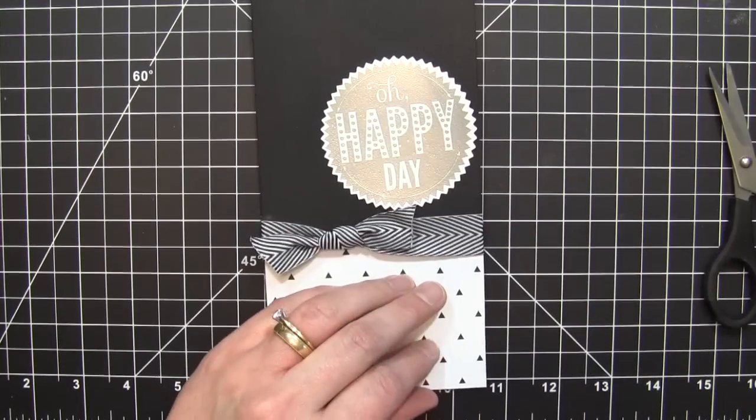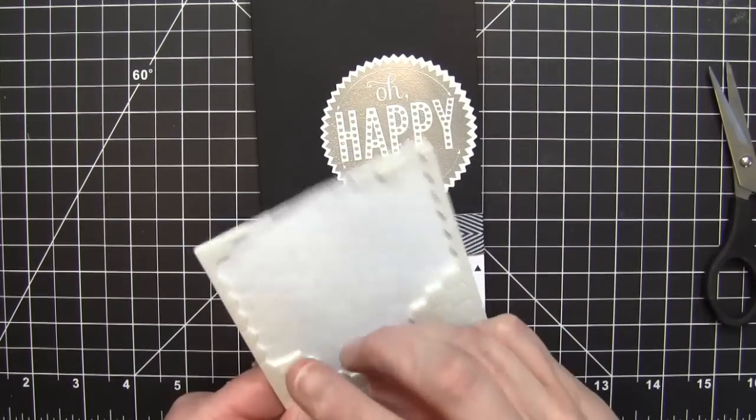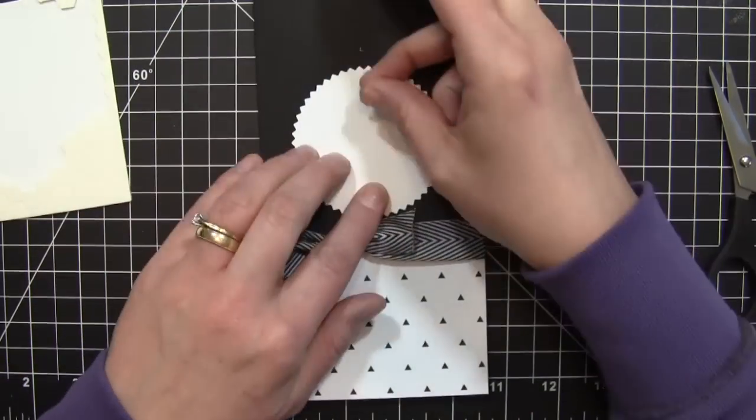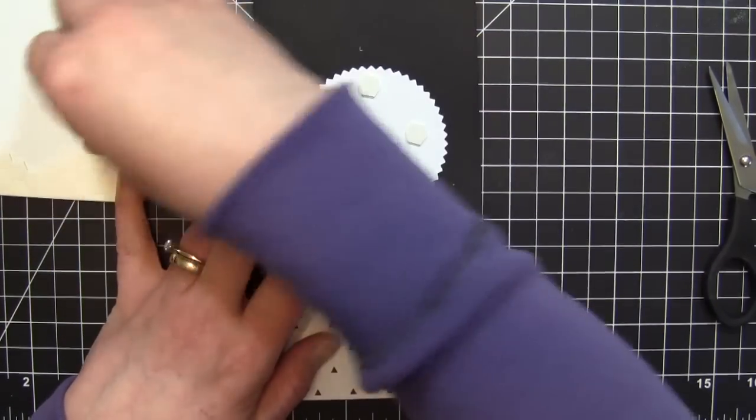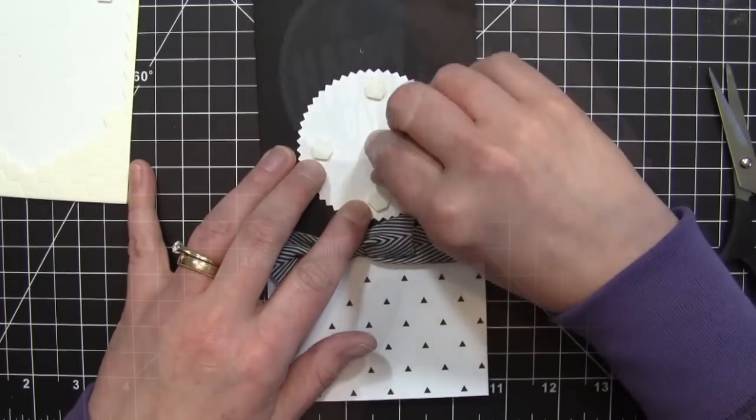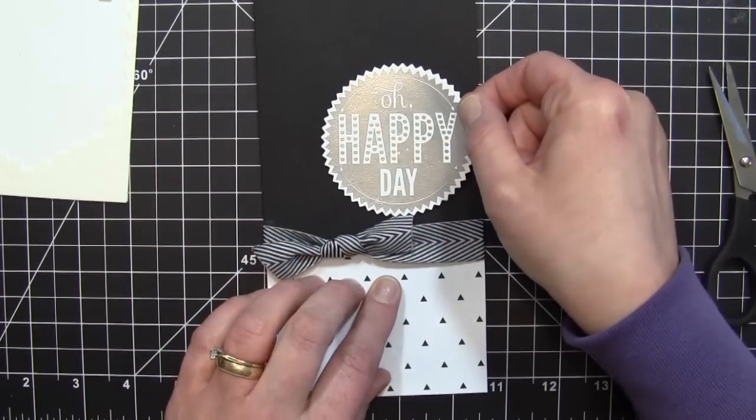Using the Oh Happy Day that I stamped out, I like this because it kind of reminds me of a silver embossed sticker. I'm adding some dimensionals to the back, adding a little extra because I know the cardstock got a little warped when I was doing the embossing, then I'll adhere that down.